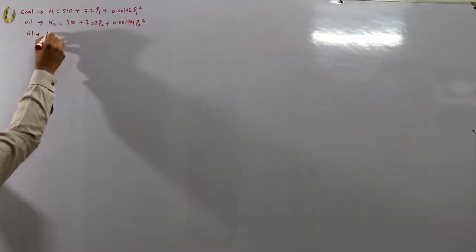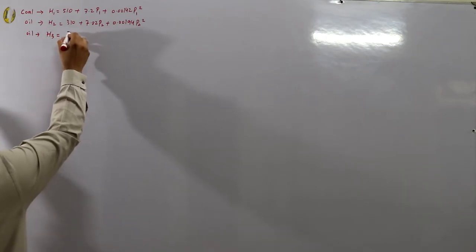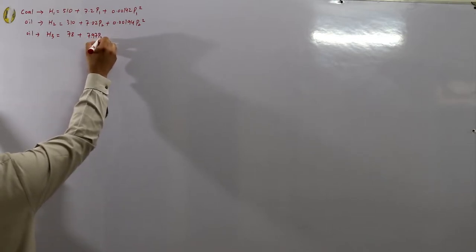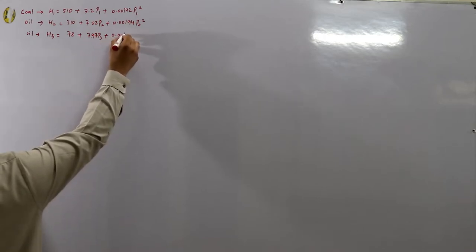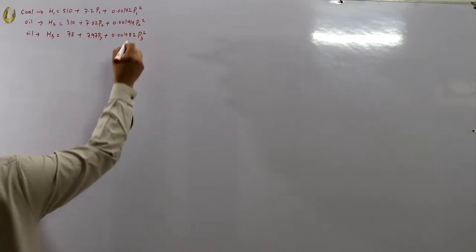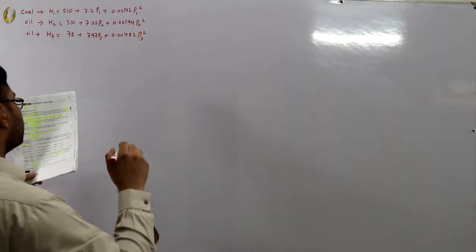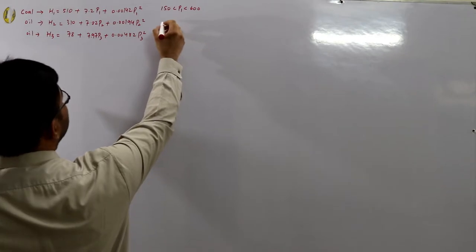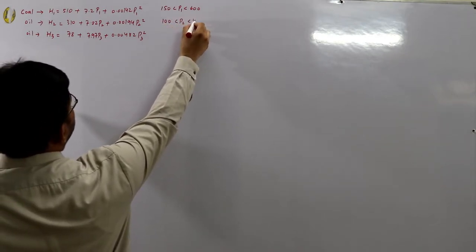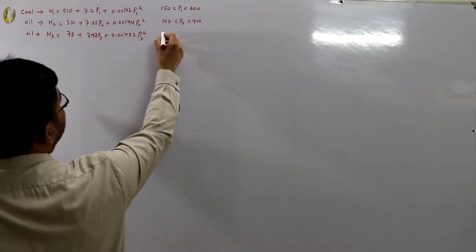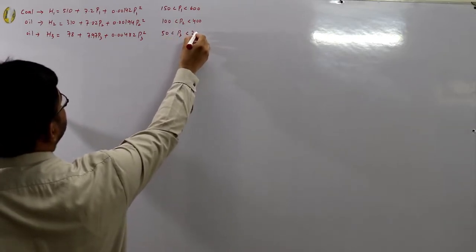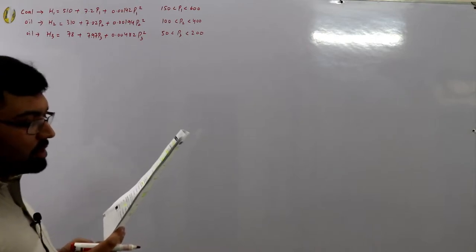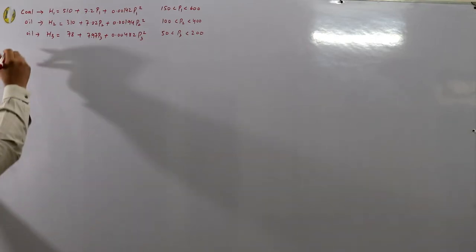Unit three is also an oil-fired station with cost model h3 = 78 + 7.97·p3 + 0.00482·p3². The optimal power dispatch limits are 150–600 MW for unit one, 100–400 MW for unit two, and 50–200 MW for unit three. Calculate the optimal power generated by each unit supplying minimum cost to a load demand of 850 MW.